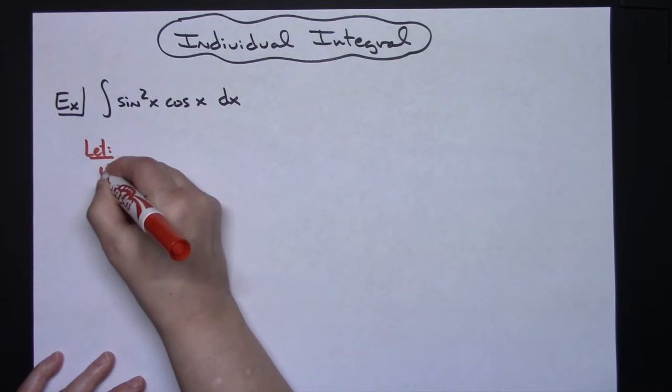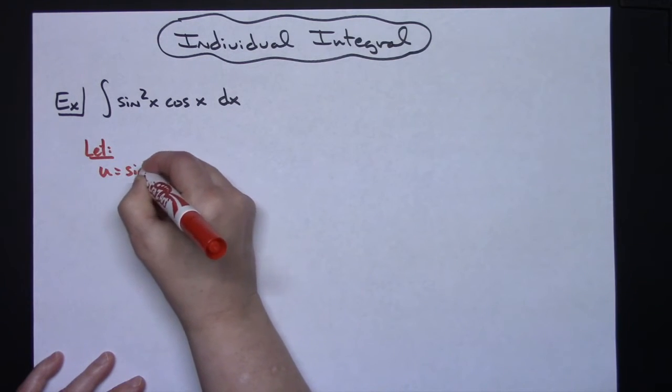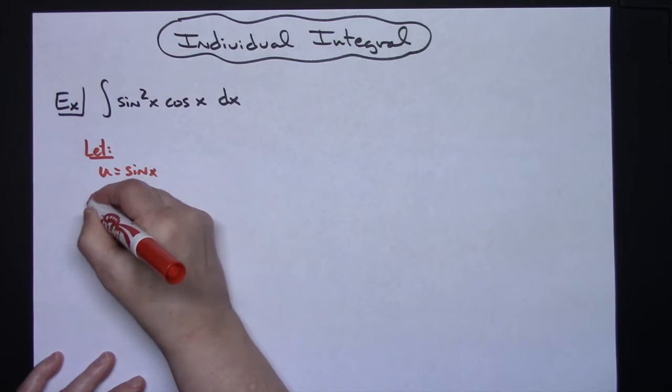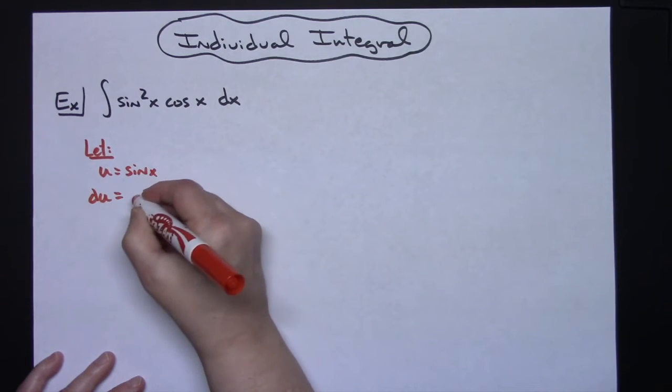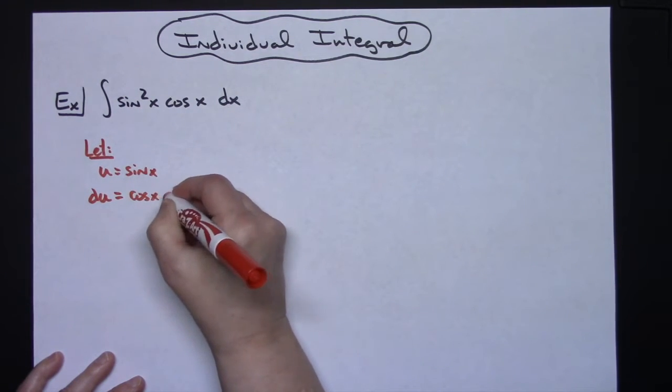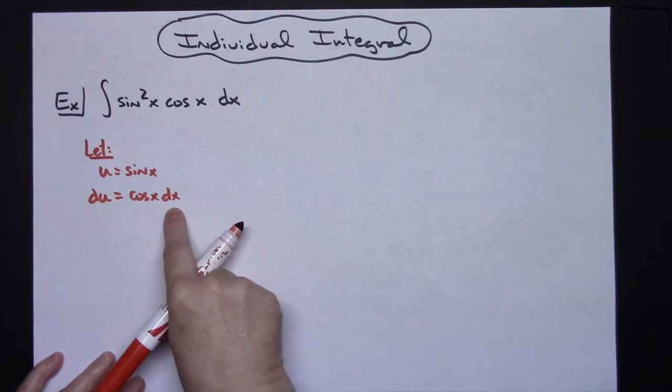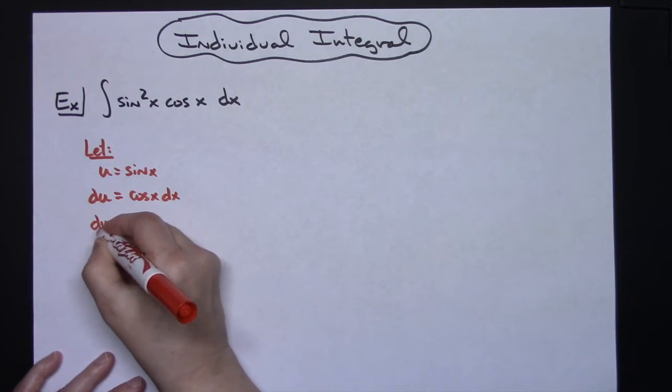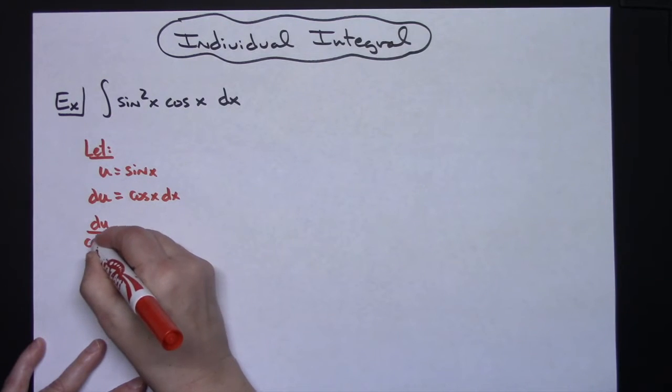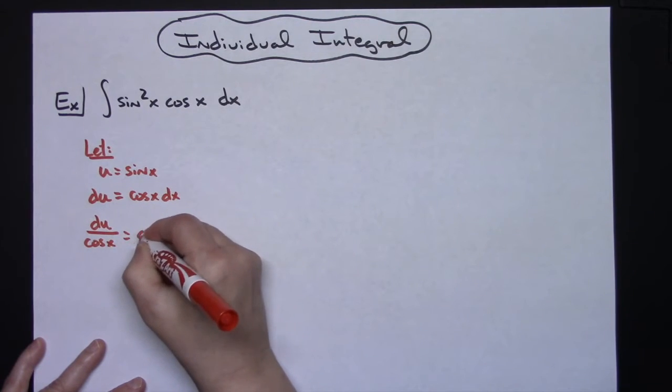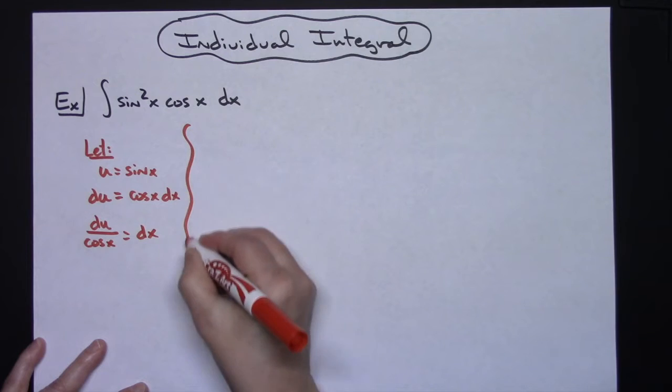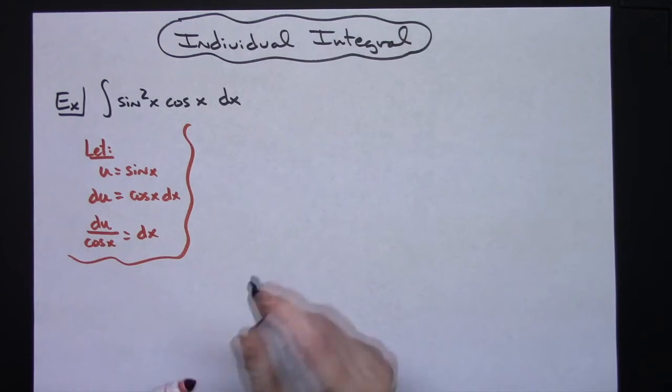We're going to let u equal sine x. I'm going to take the derivative of both sides, so du is equal to cosine x dx. Then I'm going to solve all the way down for that dx, so du over cosine x is equal to dx, showing all that right there.